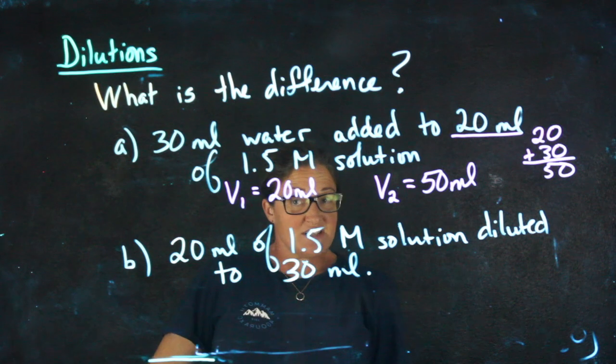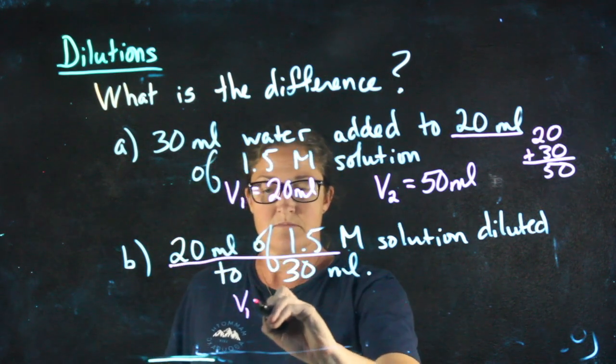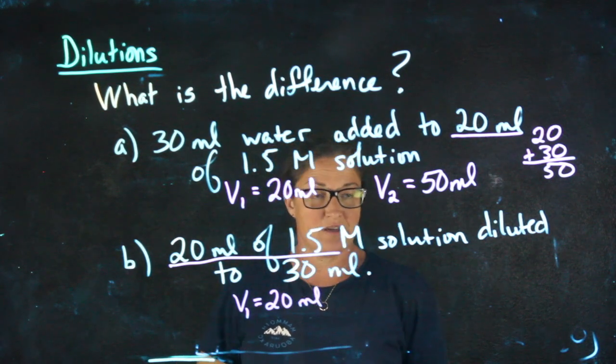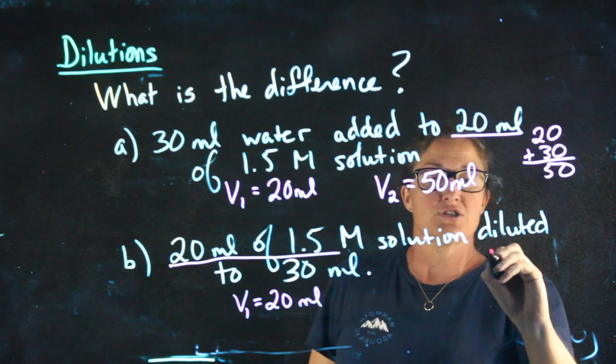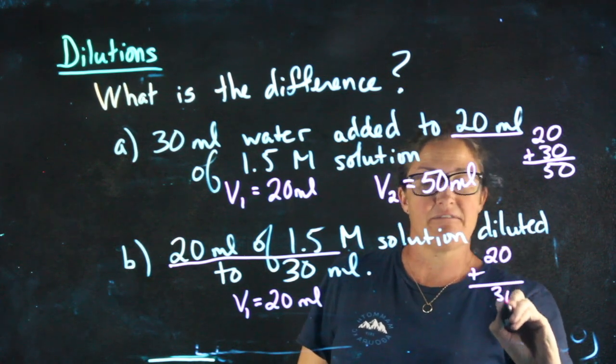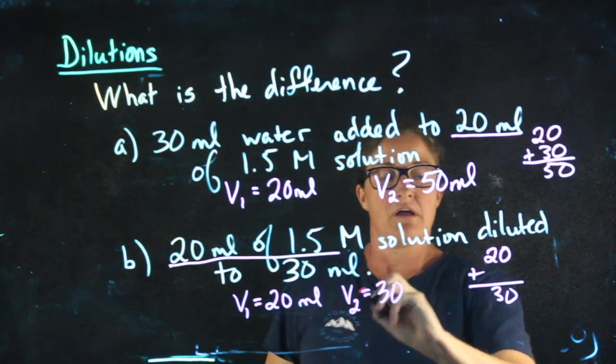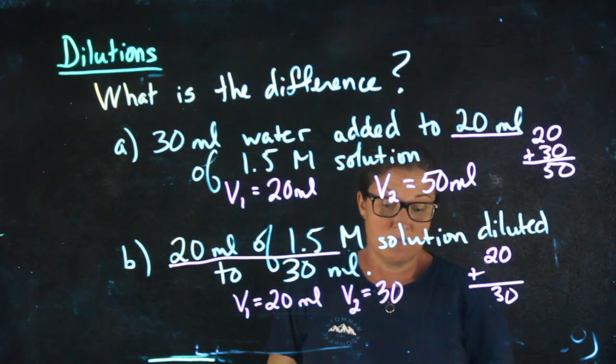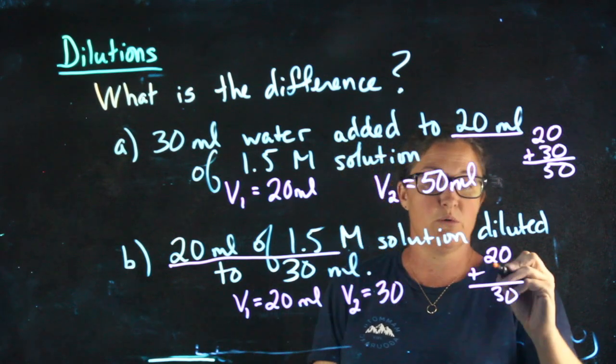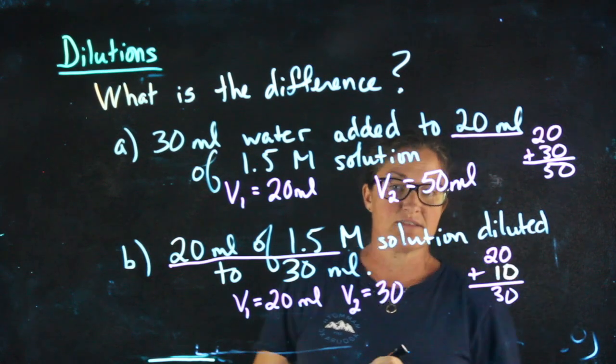The second question is different. I'm starting with the same solution. But now, rather than adding 30 milliliters, I'm diluting it to 30 milliliters. So I took 20, I added some amount of water until I finished at 30. How much water did I add? You should be able to answer that question. And in some problems where you solve for V2, you'll be asked how much water was added, which you can figure out by subtraction, what's the difference between your initial volume and your ending volume.